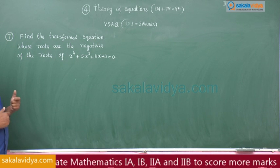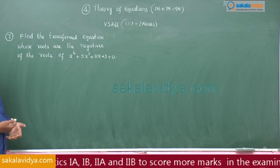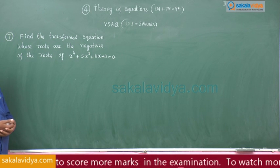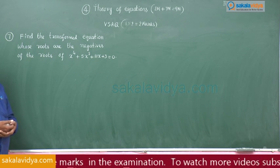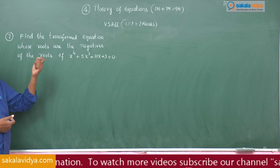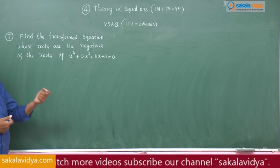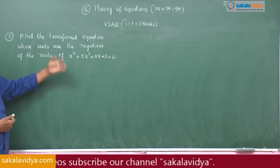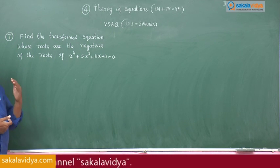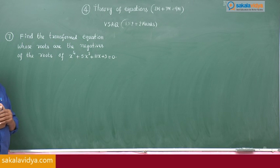That means the roots of the transformed equation are numerically equal but opposite in sign. Suppose if the roots of this equation are alpha 1, alpha 2, alpha 3, alpha 4, then the roots of the transformed equation are minus alpha 1, minus alpha 2, minus alpha 3, minus alpha 4.